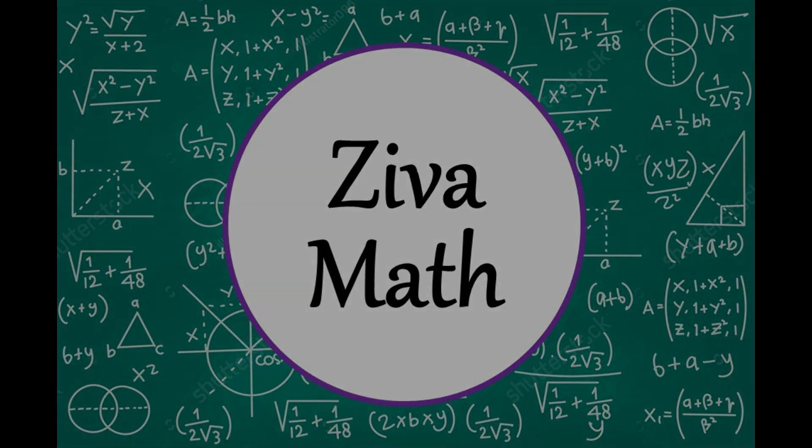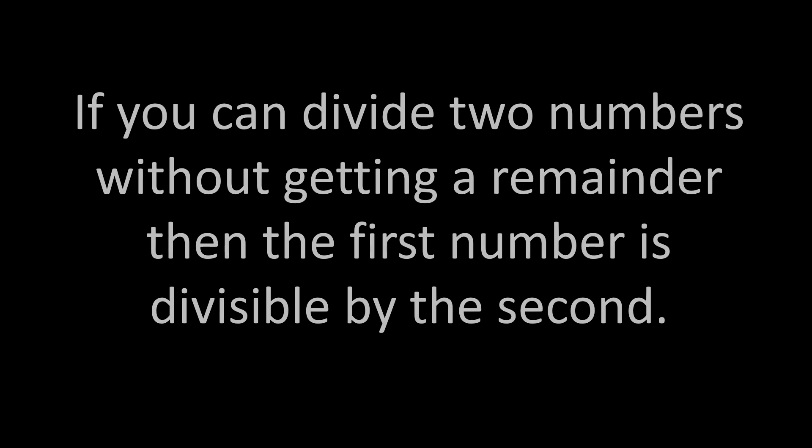Welcome to another Ziva Math video. If you can divide two numbers without getting a remainder, then the first number is divisible by the second.